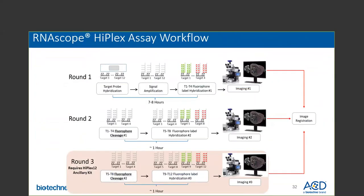The HyPlex workflow is performed in three rounds with four targets detected in each round. Round one is the longest, taking up to seven to eight hours, and includes probe hybridization and signal amplification steps. In this round, you will also detect the first set of four targets followed by imaging. After round one imaging, the next sets of four targets are iteratively detected using the same four fluorophore types followed by imaging. Once all three sets of images are generated, they are aligned with the HyPlex image registration software.